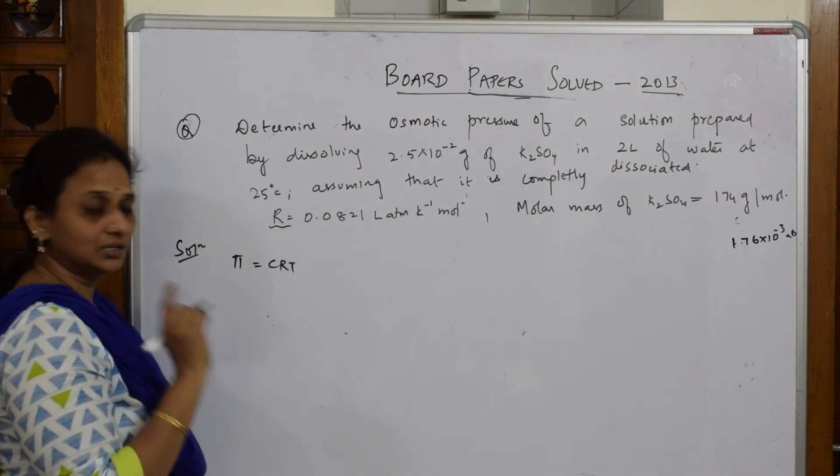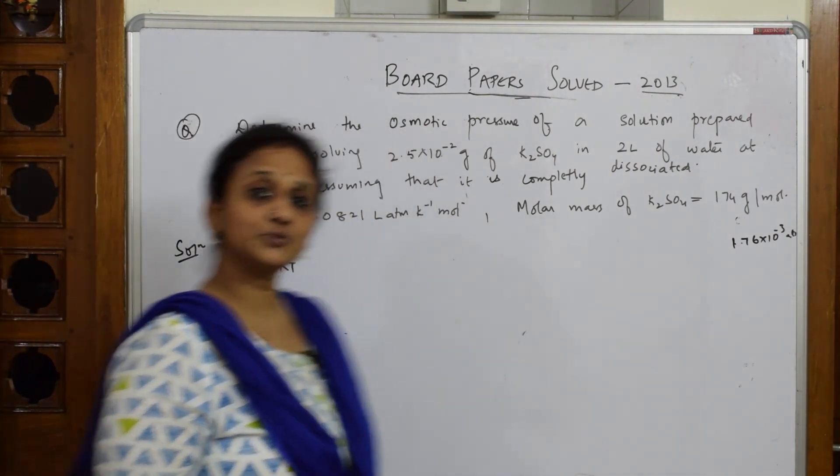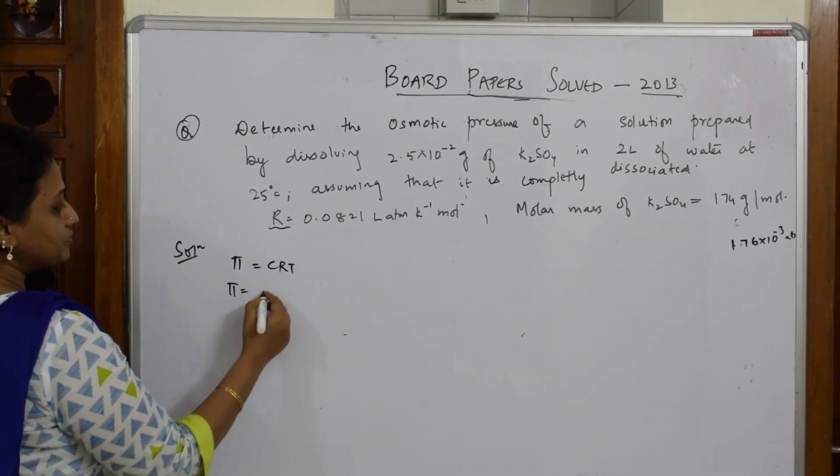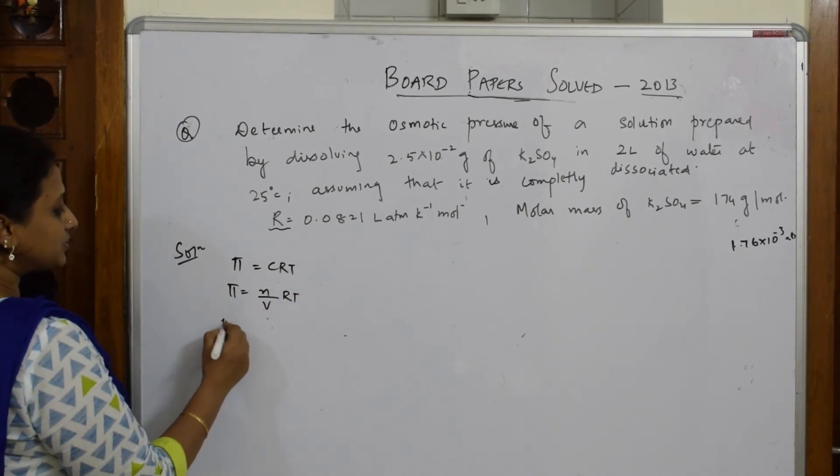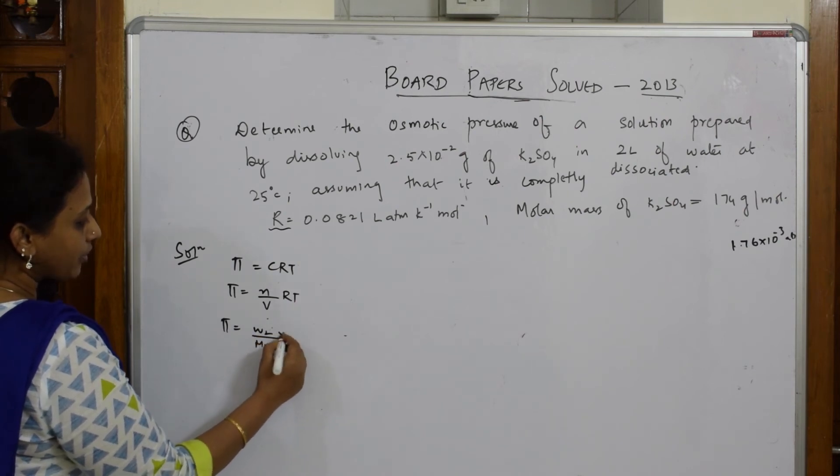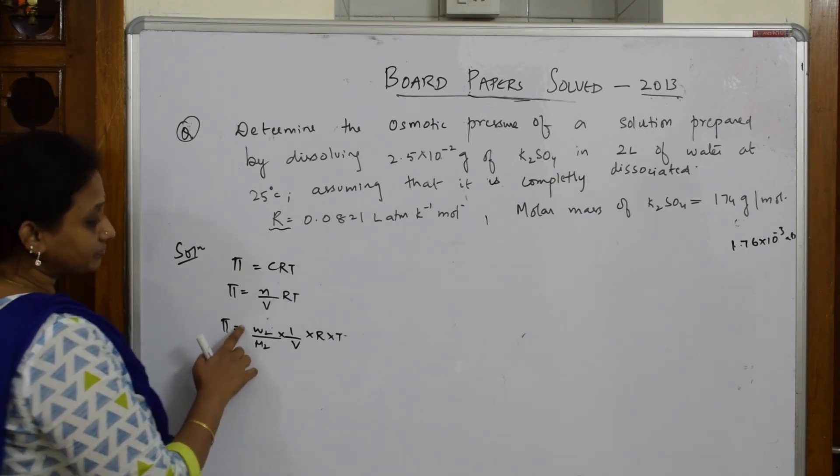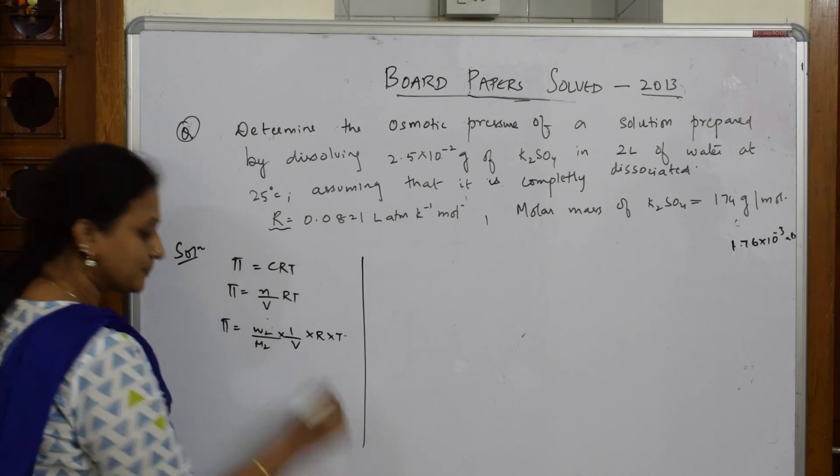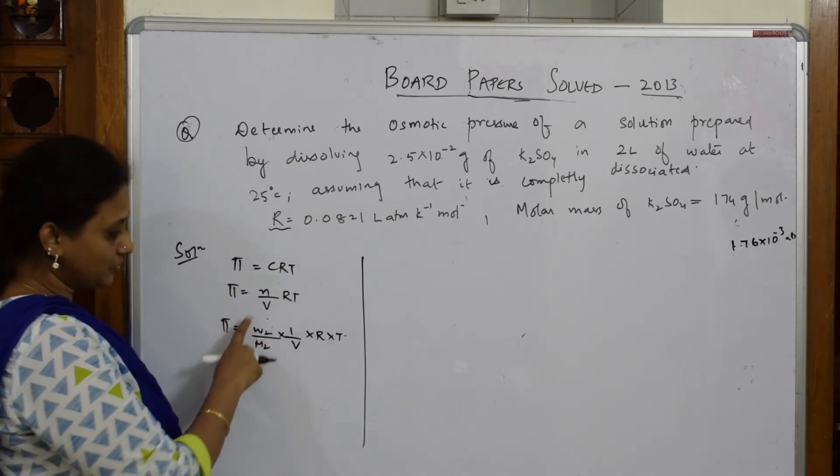Further, what do they give me? They've given me gas constant and molar mass. That means what formula should I use? Two things are given. C can be further written as C = n/V × RT. This can further be written as number of moles: W2/(M2) × (1/V) × R × T. Why am I using this? This quantity is given, this quantity is given. That means if you write the formula till here, then only you will get marks. This is the correct formula.